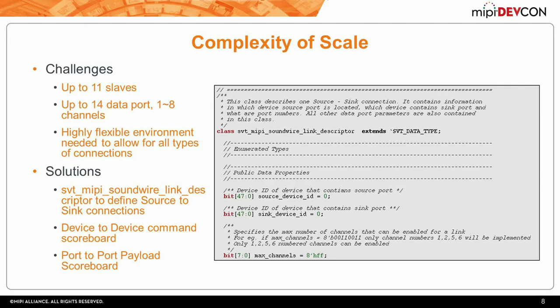The Link Descriptor Class gives you scoreboards which are device-to-device for commands—because commands travel from master to slave, slave to master, or slave to slave—and port-to-port for payload, because data travels from port to port.